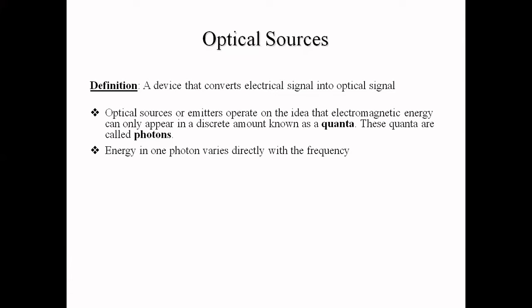An optical source is anything which converts an electrical signal into an optical signal. For example, it can be a tube light in your home, it can be a laser, it can be an LED — anything to which you feed an electrical signal and it produces light. Optical sources operate on the idea that electromagnetic energy can only appear in discrete amounts called quanta. These quanta are called photons, and the energy in one photon varies directly with the frequency.